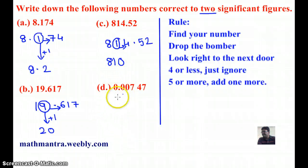Let's turn to the last one, 0.00747. Now here, the first significant figure is 7 and the next one is 4. And the next number is 7, more than 5, so add 1. So my answer is going to be 0.0075.